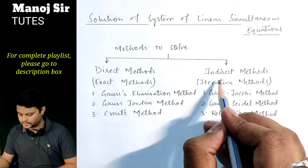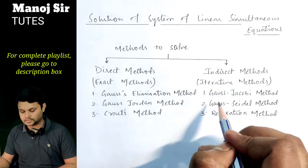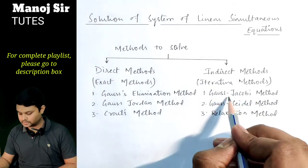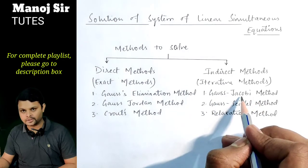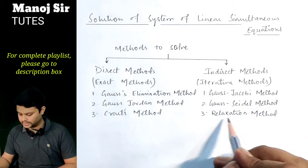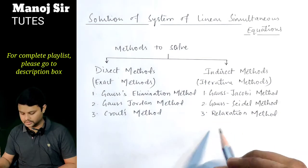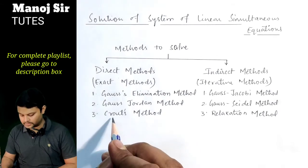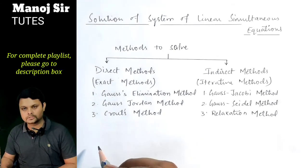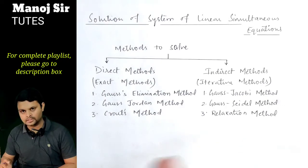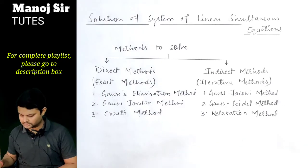In iterative methods we also have three methods: Gauss-Jacobi method, which is also known as Jacobi's iterative method; the second is Gauss-Seidel method; and the third is the relaxation method. In this particular video we are going to discuss Crout's method, which is also known as LU decomposition or the factorization method.